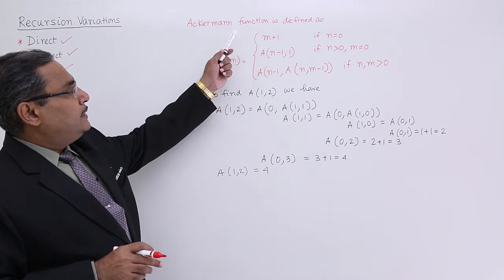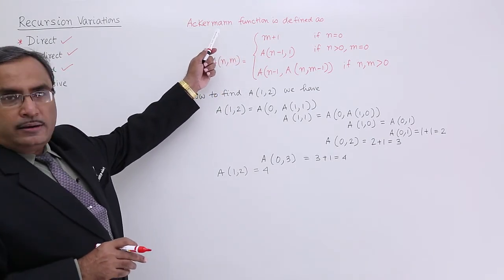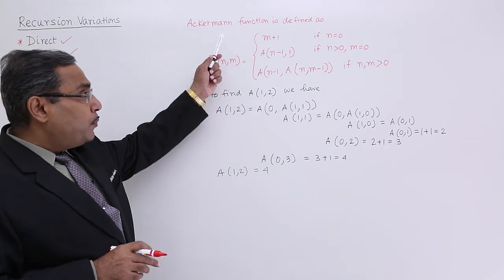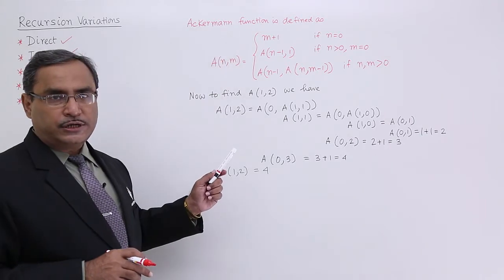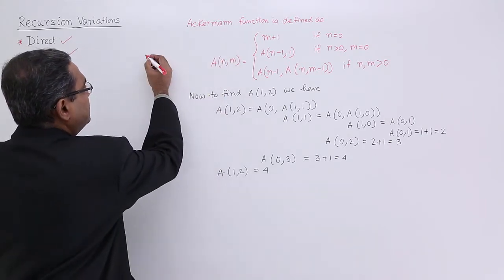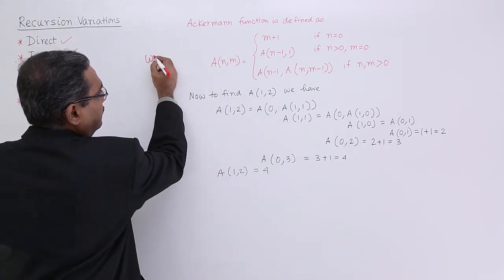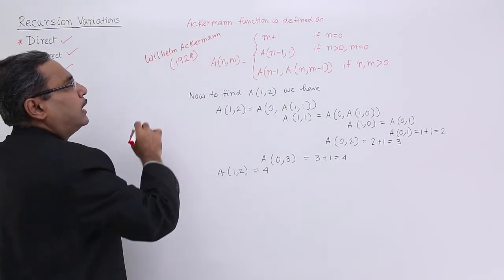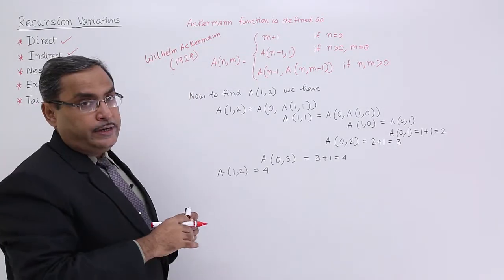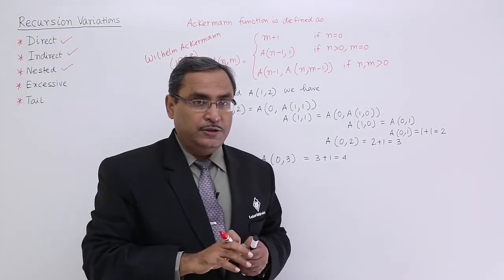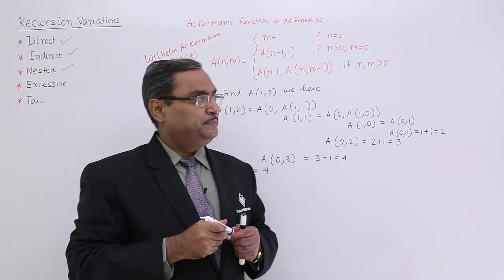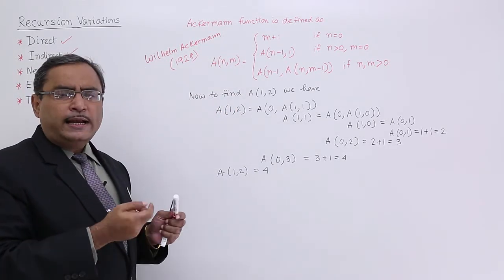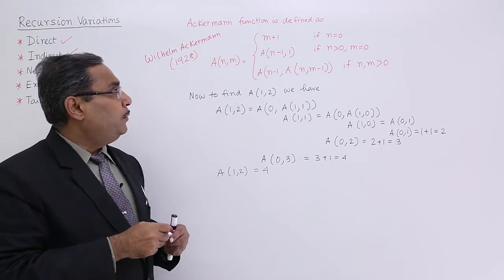Wilhelm Ackermann, in the year 1928, proposed this particular function. This is a very famous function. A(n, m) — n and m are the two input arguments.